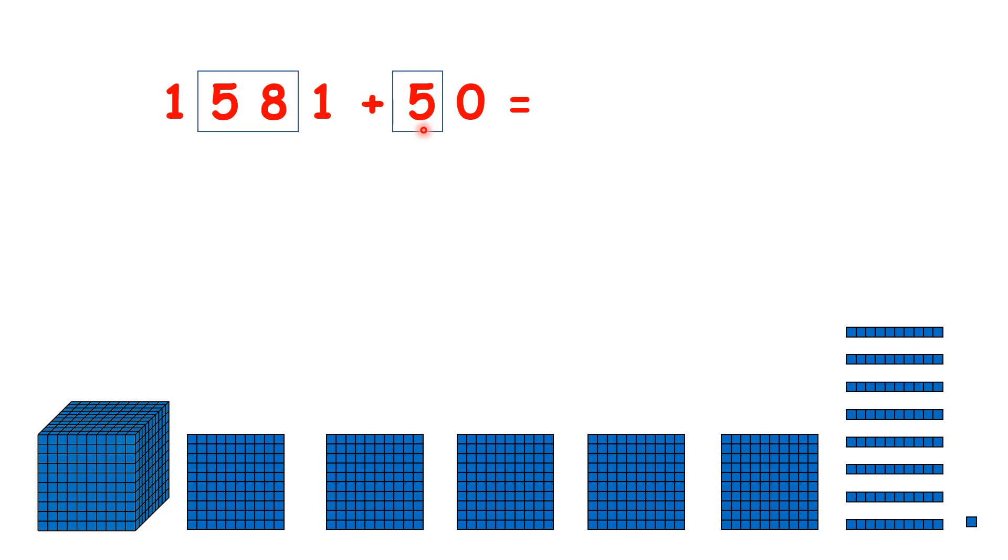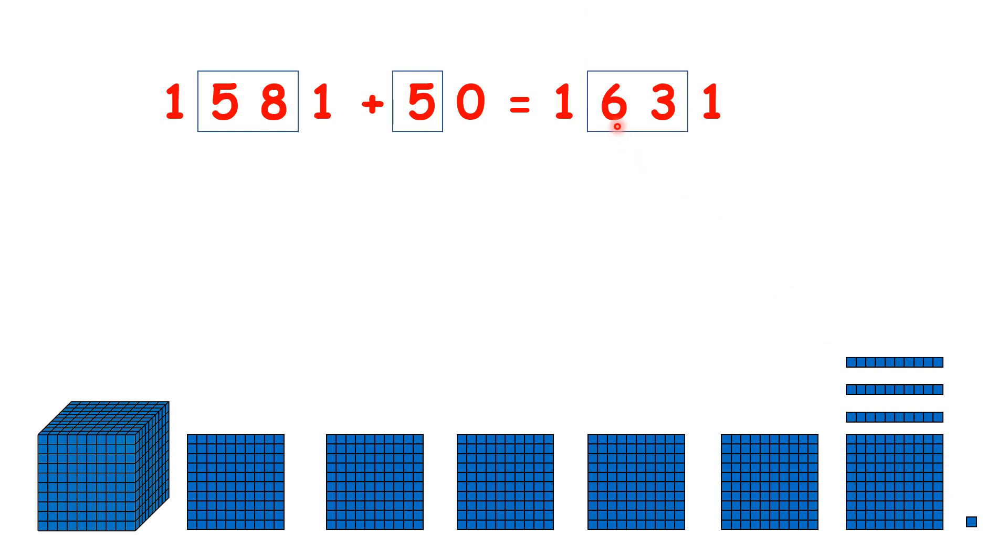We're adding 5 tens, but once we add 1, 2 tens, we have 10 tens altogether. So we need to regroup to make 100. So we've already added 2 tens, and we want to add 5, so let's add 3 more tens. That gives us 1,631. We now have 6 hundreds and 3 tens, which is the same as 63 tens.